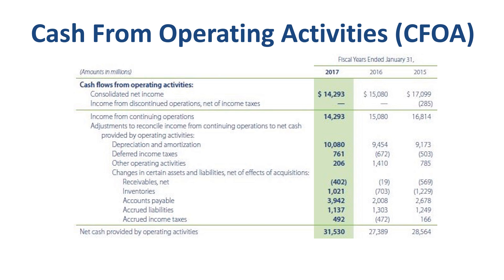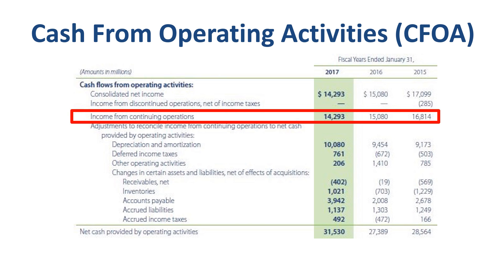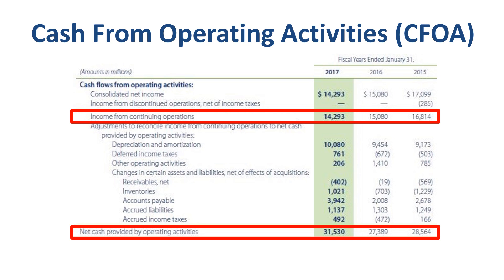Walmart is a very profitable company. Taking income from continuing operations as a start, this number is $14.3 billion in 2017 — lower than in 2016 and 2015, but still very high in absolute terms. When we look at the bottom of the page, net cash provided by operating activities is far higher than income from continuing operations, and while income from continuing operations fell, net cash provided by operating activities was higher than in previous years.